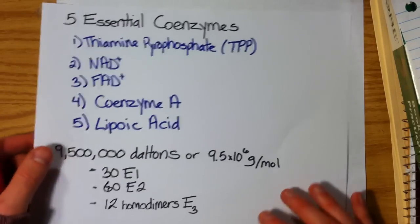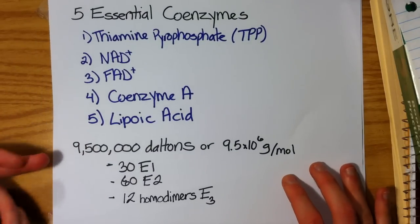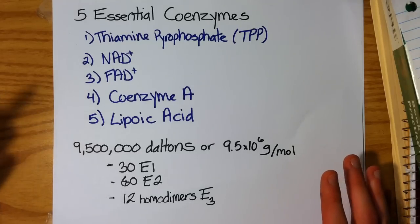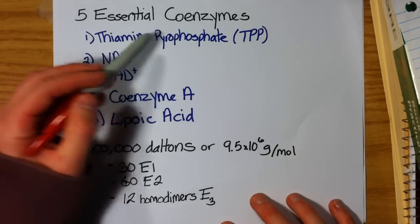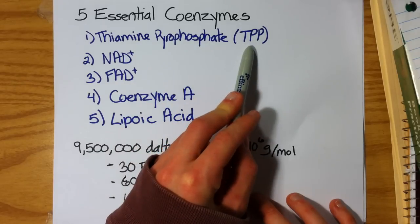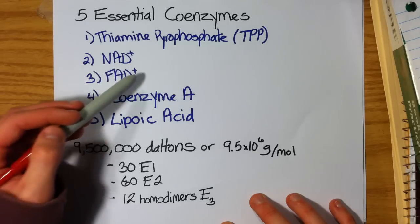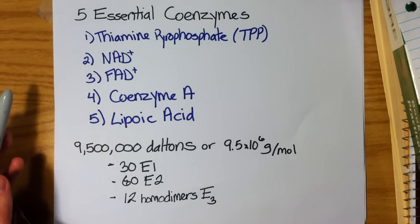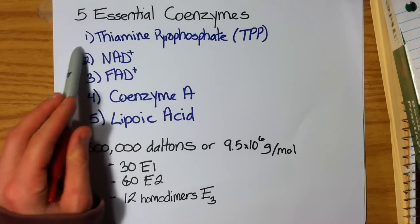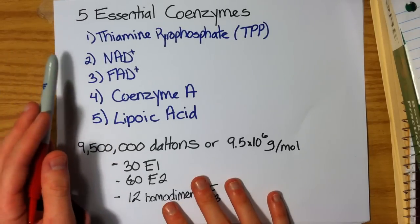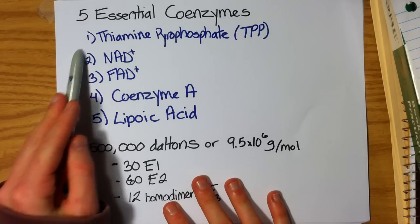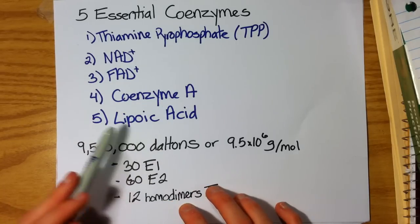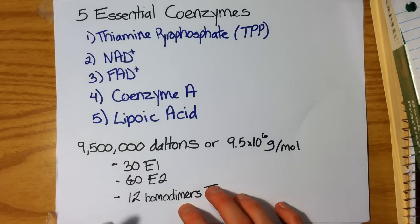There are five essential coenzymes needed for this enzyme complex to work properly, and they are thiamine pyrophosphate (or TPP), NAD+, FAD+, coenzyme A, and lipoic acid. You will see when we go over the enzyme mechanisms involved in each of the subunits how each one of these plays a vital role in the conversion of pyruvate into acetyl-CoA.